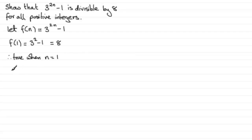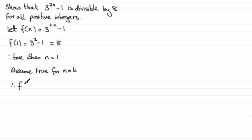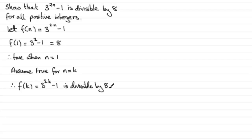Now we go on to assume that it's true for n equals some positive integer k. So we know that f(k), which equals 3 to the power 2k minus 1, is divisible by 8. We assume it's divisible by 8.